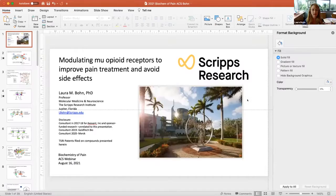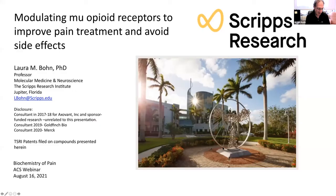Thank you, Lakshmi, for this really exciting, thought-provoking talk. Next I'd like to introduce Laura Bond. Laura is a real pioneer in the field of opiate receptor pharmacology and biology. She's going to talk to us today about modulating mu receptors to improve pain treatment and avoid side effects. She's currently at Scripps. Go ahead, Laura. Thank you, Brian, for inviting me and for hosting this webinar. I will try to walk you through some of our recent findings, and I think it really builds nicely off of what Lakshmi has just presented — introducing this concept that it's more than just one pathway, more than just one response: the receptor is a rather complex unit.